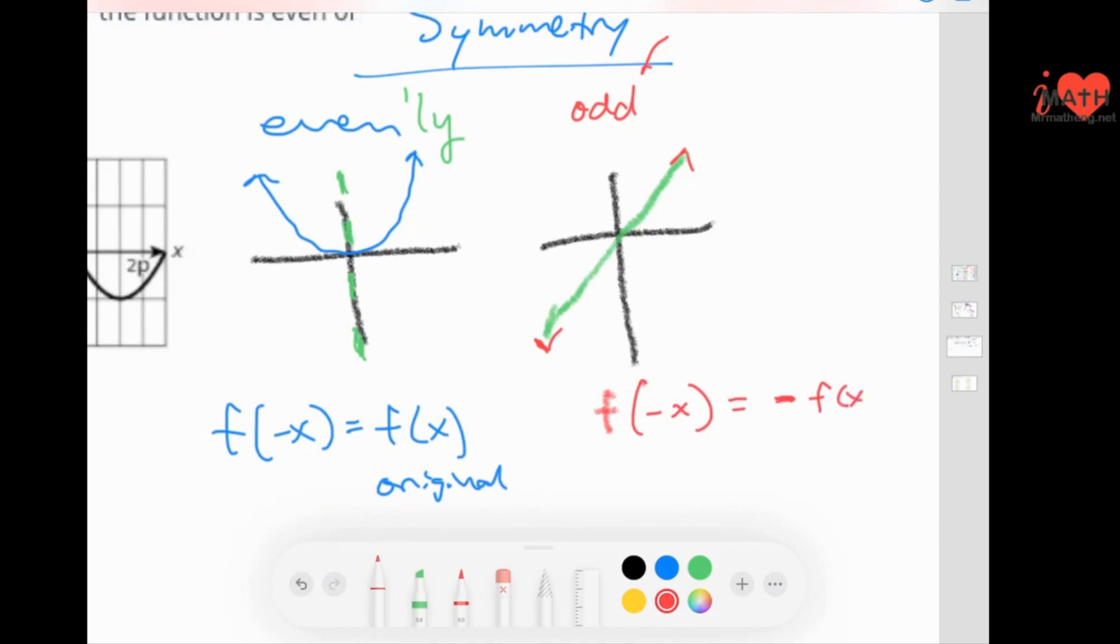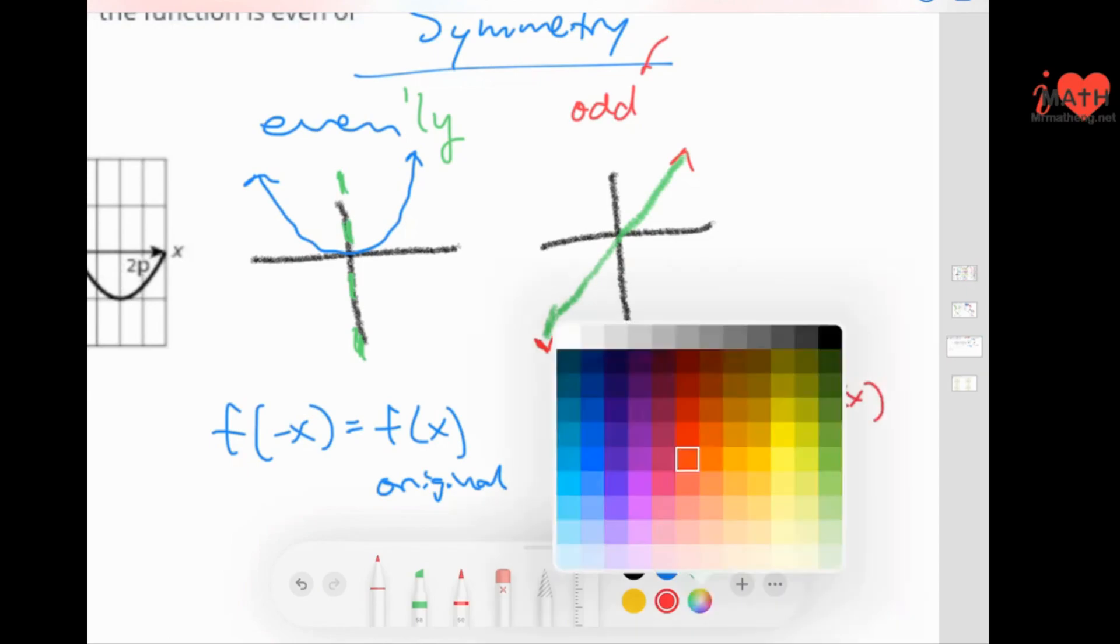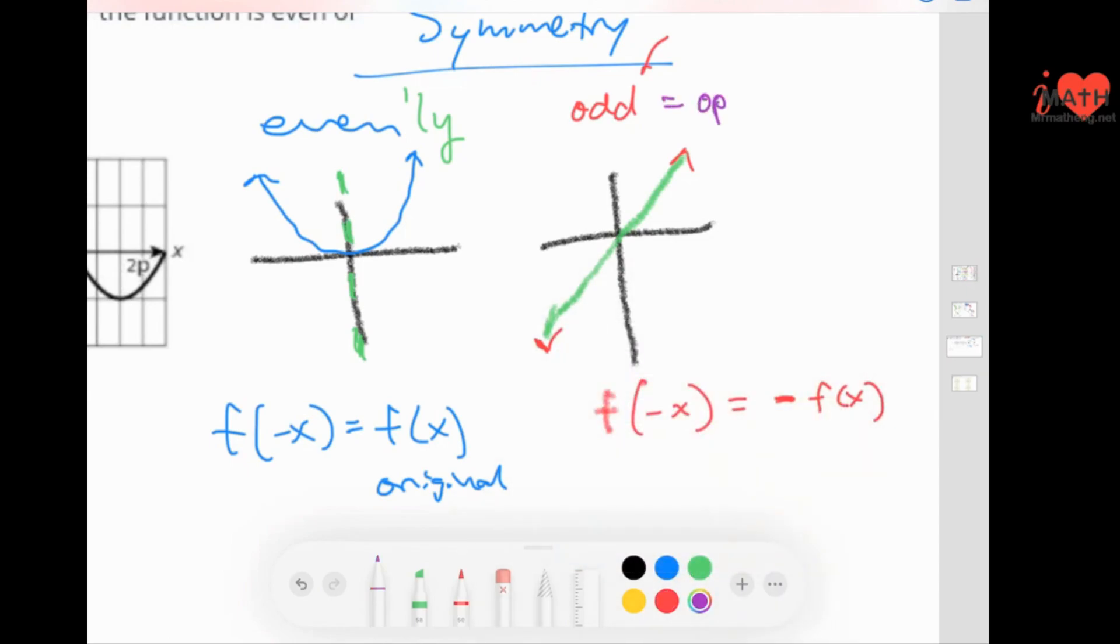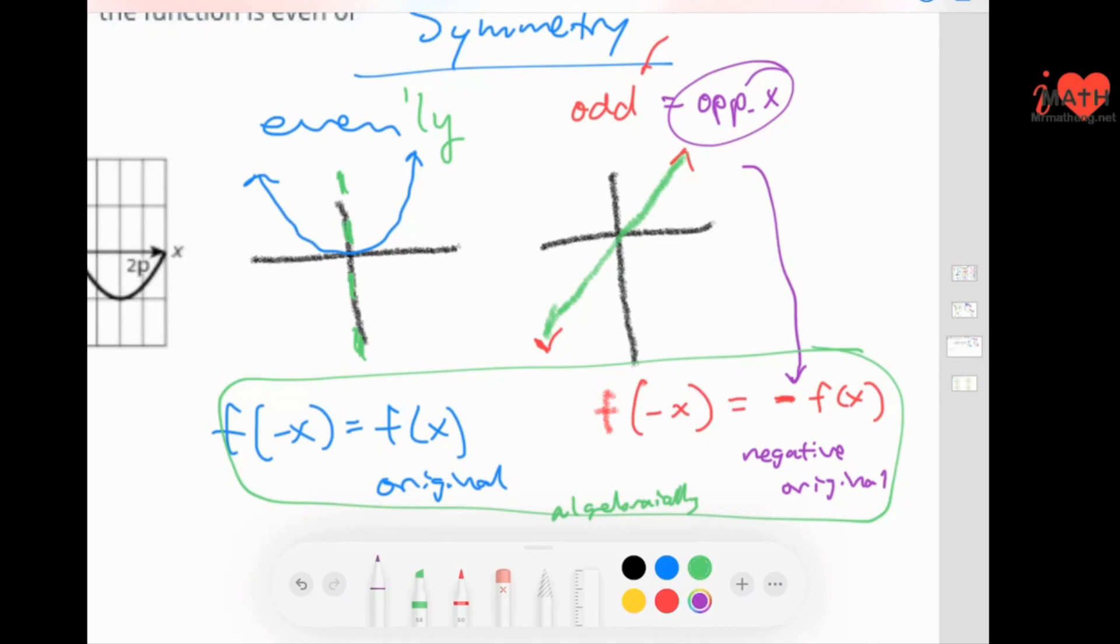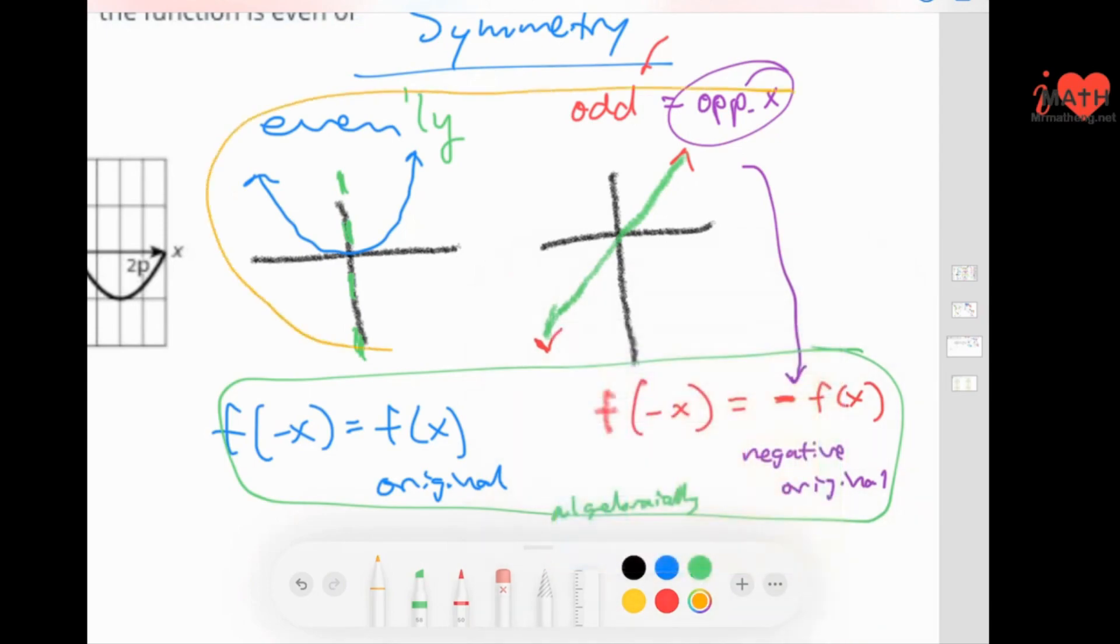And when you put in negative x, you're going to get the opposite of the original. And I like to call that op x, or the opposite of x. Negative or opposite of the original. That's how you would do these down here algebraically. And then everything in orange up here is graphically.